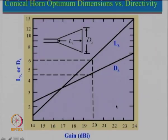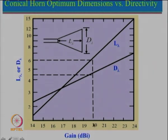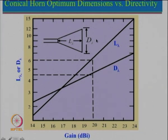An alternate way is to look at the curve given in the textbook where gain is shown along one axis and the length or diameter of the horn on the other. For example, if the requirement is to design a conical horn antenna at 20 dB, draw a vertical line at 20 dB and read the value of L/lambda as approximately 6 and D/lambda between 4 and 5. However, I suggest taking a slightly larger length, which will reduce the phase error and hence improve the efficiency of the horn antenna.